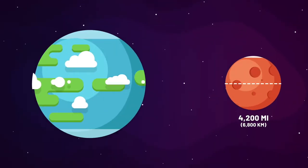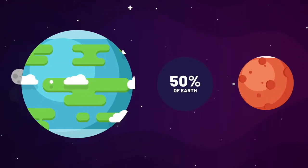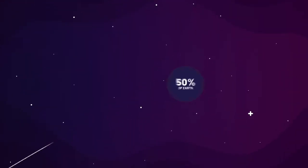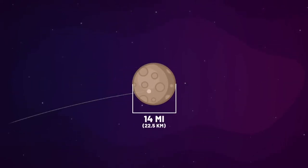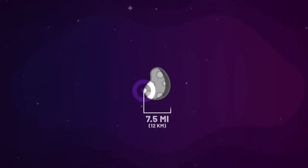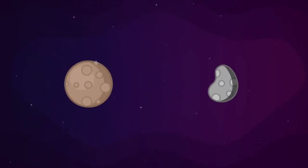At a modest 4,200 miles across, Mars is roughly half the size of Earth. Yet despite its smaller size, Mars has two moons of its own: Phobos and Deimos, translated to fear and terror. But don't let their names fool you. At just 14 and seven and a half miles across, Phobos and Deimos don't exactly give off scary vibes.